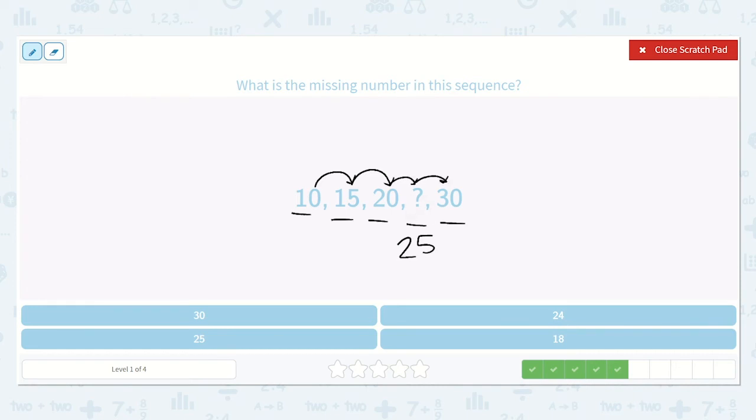Again, remember, if you are not sure, but you know it's going up by 5s, you can always draw your dots and count them. So 25 is the answer.